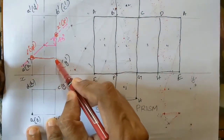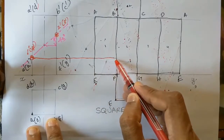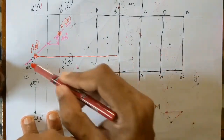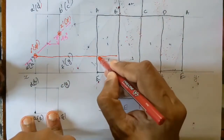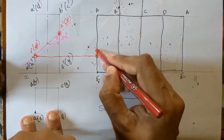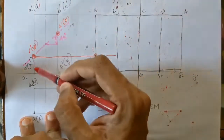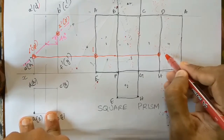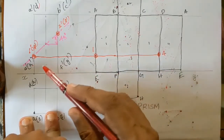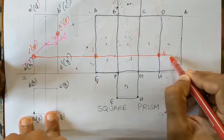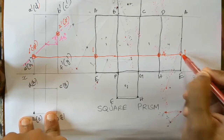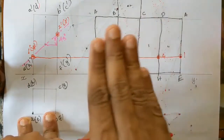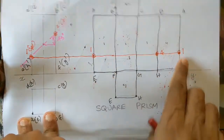We project from the section view to get the development points. The line A'E' gives section point 1, and line D'H' gives section point 4. The edge A'E' is a point in the top view, and this same point is used consistently as point 1 in the development.